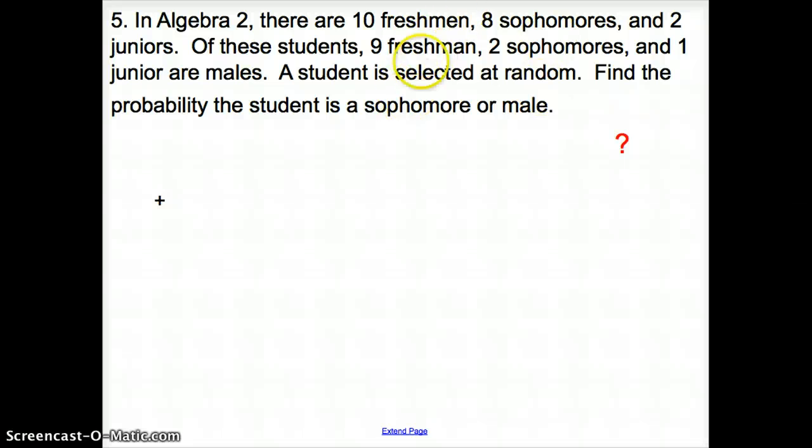Now, we have 10 freshmen, 8 sophomores, and 2 juniors in Algebra 2. One of these students, 9 freshmen, 2 sophomores, 1 junior are males. Now, let's select a student at random. Find the probability that the student is a sophomore or a male. Now, do we have sophomores that are males? Yes, we do. So, since we do, we are not mutually exclusive.